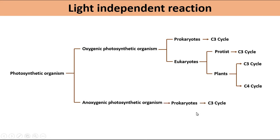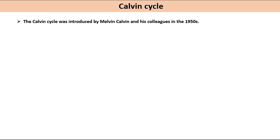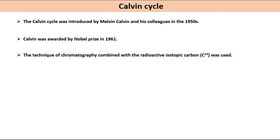The Calvin cycle was introduced by Melvin Calvin and his colleagues in the 1950s, for which Calvin was awarded the Nobel Prize in 1961. The technique of chromatography combined with the radioactive isotopic carbon C14 was used. The Calvin cycle is categorized into three stages.